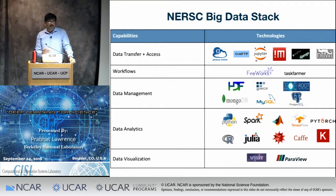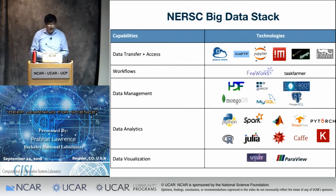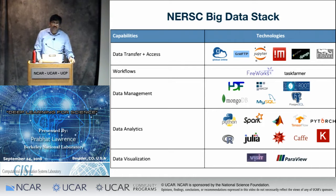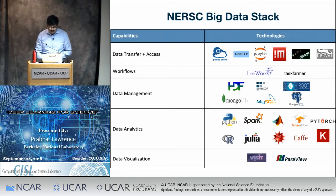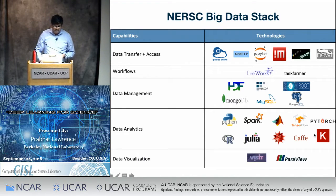Data management is important — storing a petabyte of data in text CSV files just won't scale. We use IO middleware like NetCDF, HDF5, and database technologies like MongoDB for unstructured data. For visualization, we have VisIt and ParaView as preferred scientific visualization tools. On the analytics side, Python is preferred for general-purpose analytics, R for statisticians, and Julia is an up-and-coming language we support at NERSC. Broader frameworks like Spark, MATLAB, and Mathematica are also there. And of course there are deep learning frameworks we support.